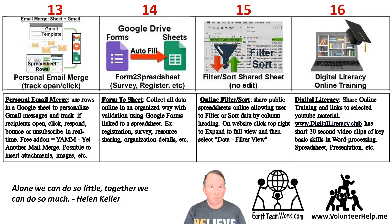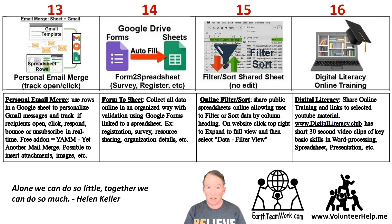Fourteen, form to sheet. We mentioned it for feedback, but you can use it for anything — registrations, surveys, anything where you want to collect information in an organized way. You create a Google form and validate their answers so they can't put in dates that don't exist or numbers that are too high, and that links directly to a Google sheet. If you know how to make a pivot table or sort things, it's much simpler to work with information in that format.